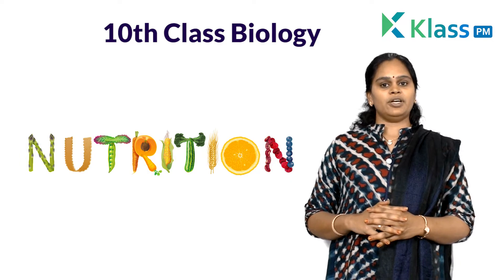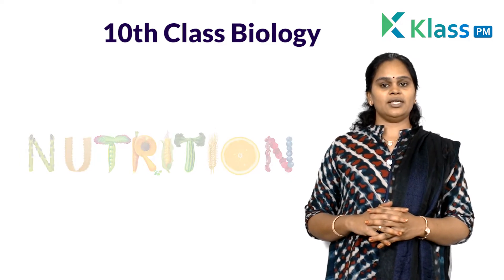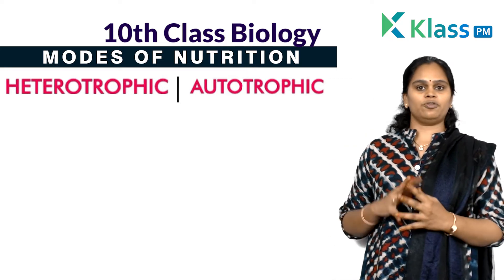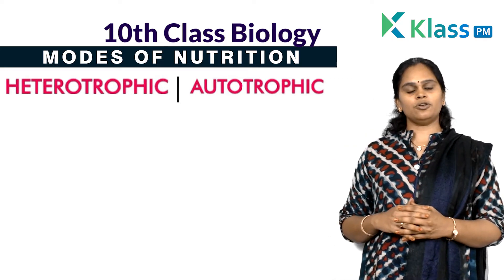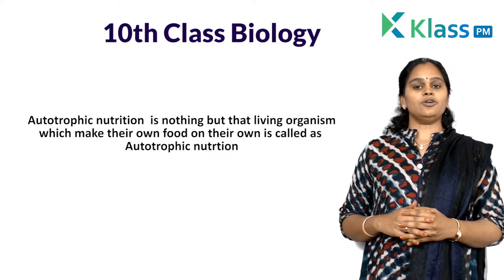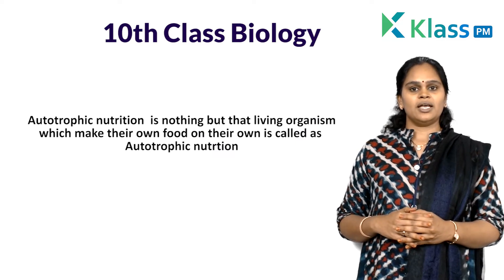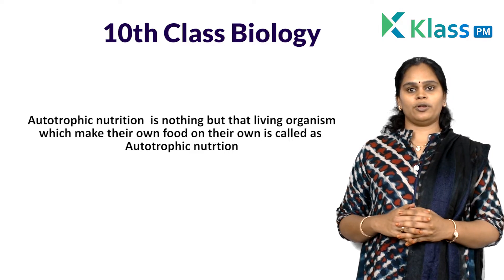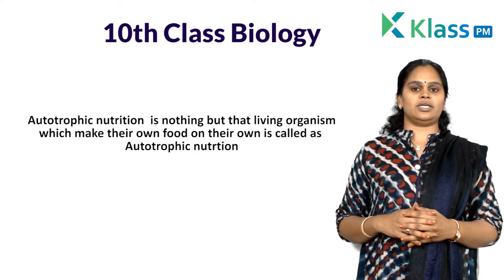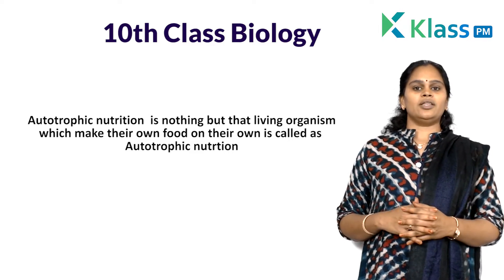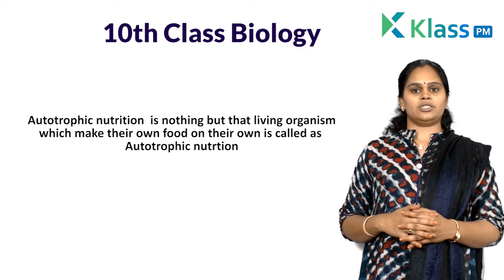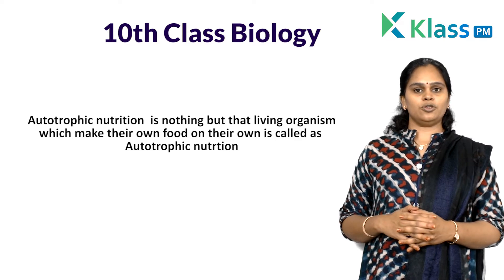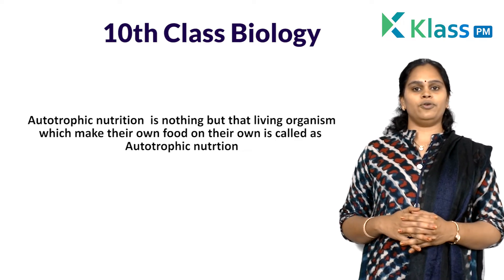Nutrition may be classified mainly into two categories: autotrophic nutrition and heterotrophic nutrition. Autotrophic nutrition is when living organisms make their food on their own. Organisms which cannot make their food on their own follow heterotrophic nutrition. All heterotrophic organisms depend upon the autotrophs for generating their own food.